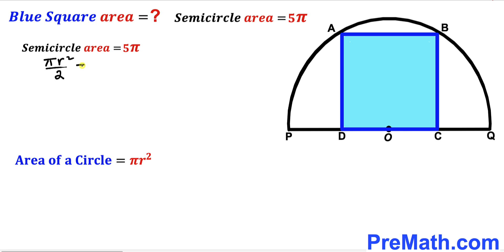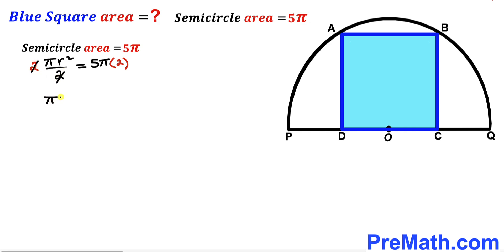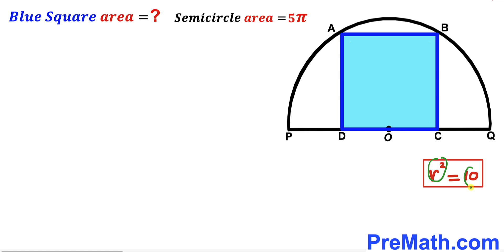That is going to be equal to 5 times pi. I'm going to remove the fraction by multiplying 2 on both sides, so 2 and 2 cancel. We are left with pi times r squared equals 10 times pi. Dividing both sides by pi, pi cancels on both sides, so our r squared value turns out to be equal to 10.